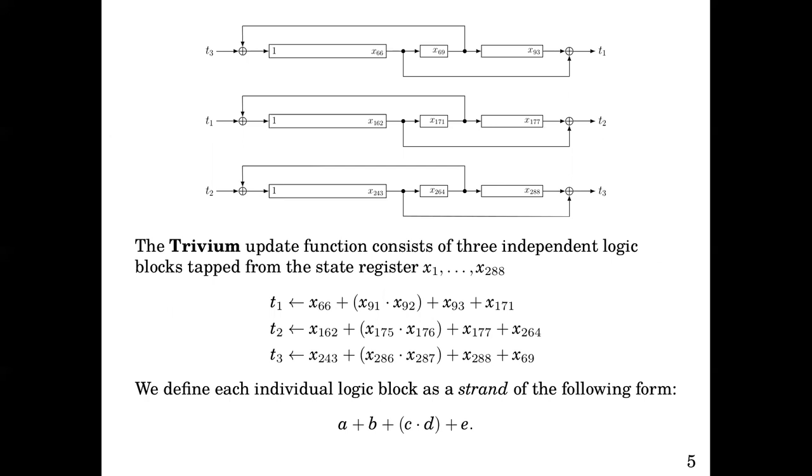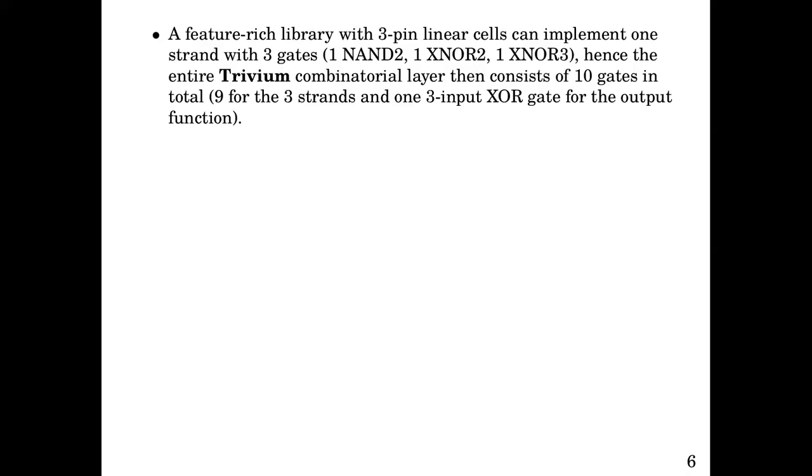Let us now transition to the meat of the paper. The trivium update function consists of three independent logic blocks, t1, t2, and t3, tapped from the state register x1 to x288. We define each individual logic block as a strand of the following form: a plus b plus c times d plus e. A feature-rich library with three-pin linear cells can implement one strand with three gates: one 2-input NAND, one 2-input XOR, and one 3-input XOR. Hence, the entire trivium combinatorial layer consists of 10 gates, three strands, and one 3-input XOR for the keybit generation.